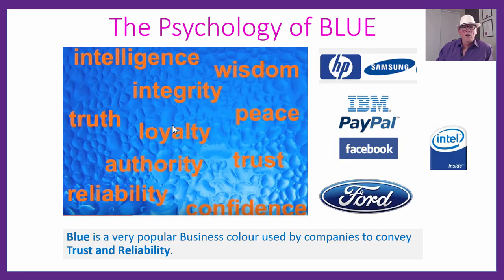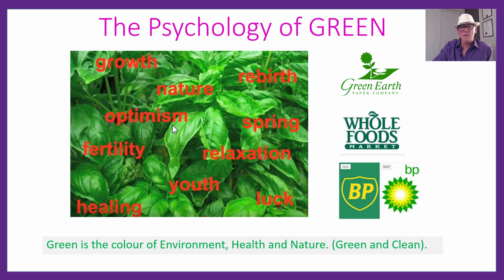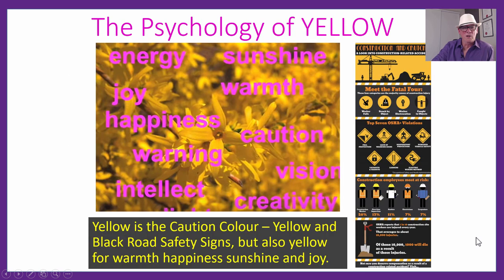Blue is very popular for companies — it means trust and reliability. Samsung, for example: if you buy one of their mobile phones or TVs, you trust it's going to be reliable. Green is for environment and nature. Very clever how the petrol company BP changed their whole logo to look like the sun and flowers — environmentally friendly stuff. That was done deliberately, of course.